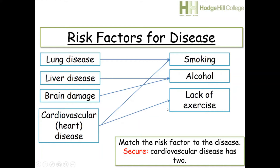Why is smoking a risk factor? In the case of lung disease, smoking can damage the bronchioles and the alveoli. This reduces the surface area, so less oxygen can diffuse into the bloodstream and less carbon dioxide can diffuse out of the bloodstream. In cardiovascular disease, smoking is a risk factor because it damages the lining of the arteries, including the coronary artery.